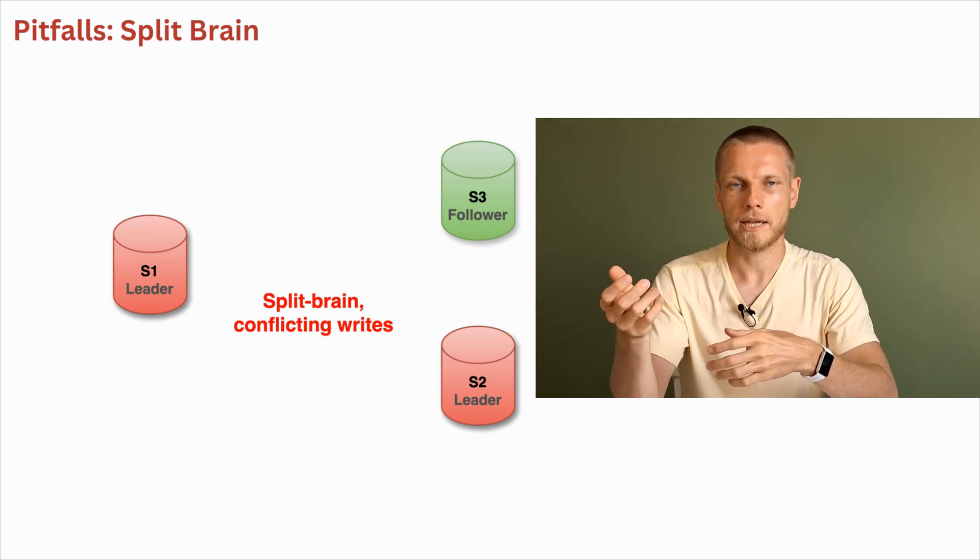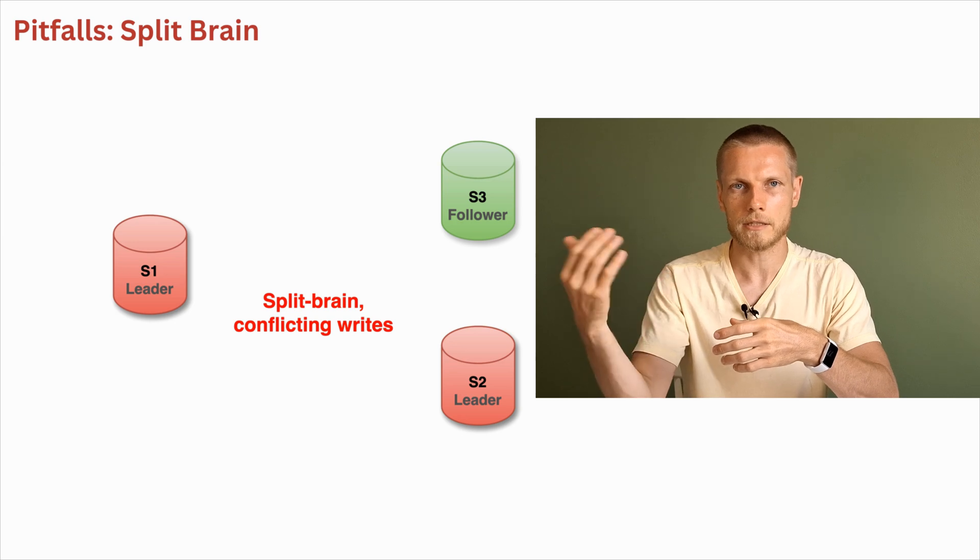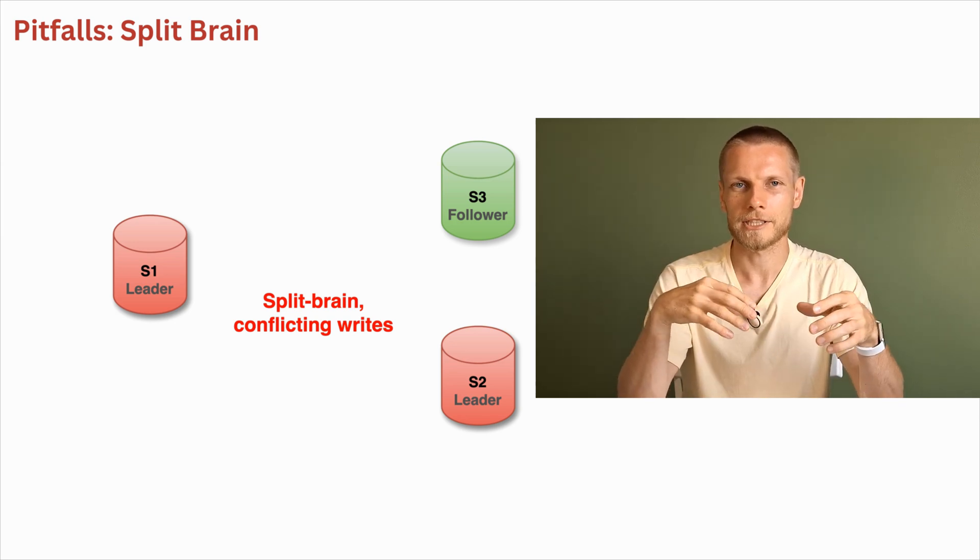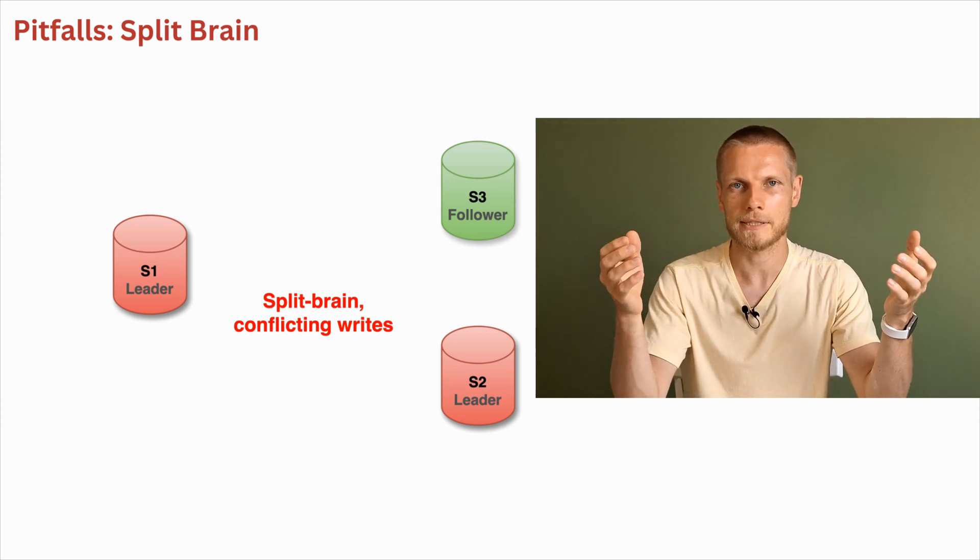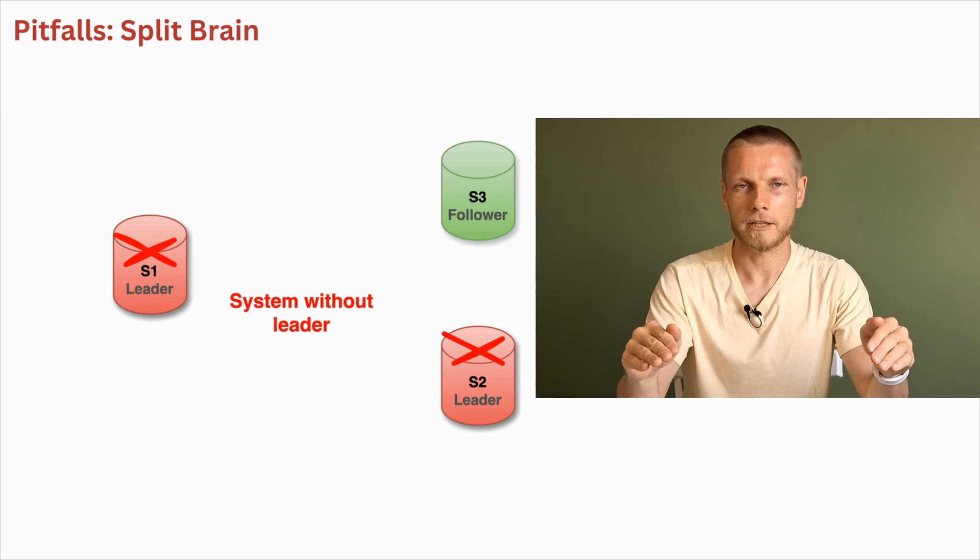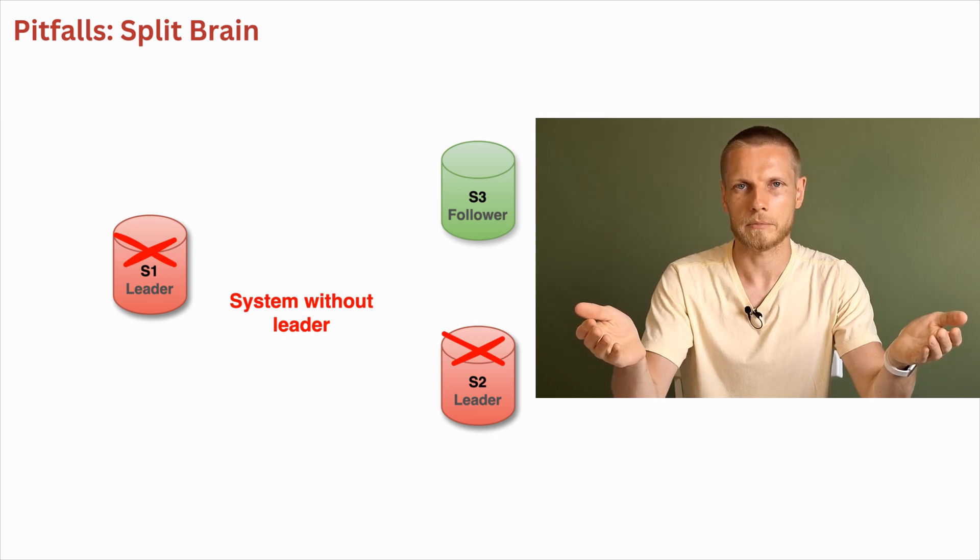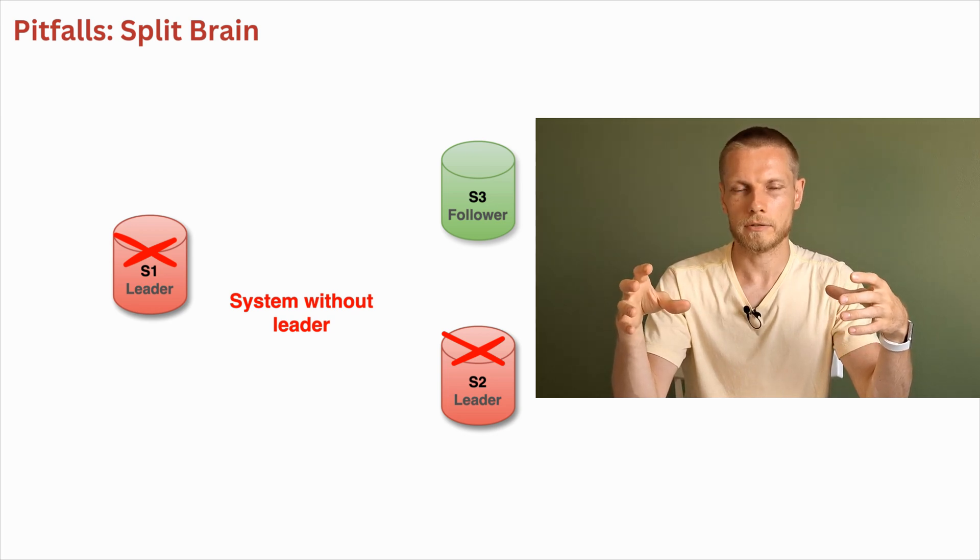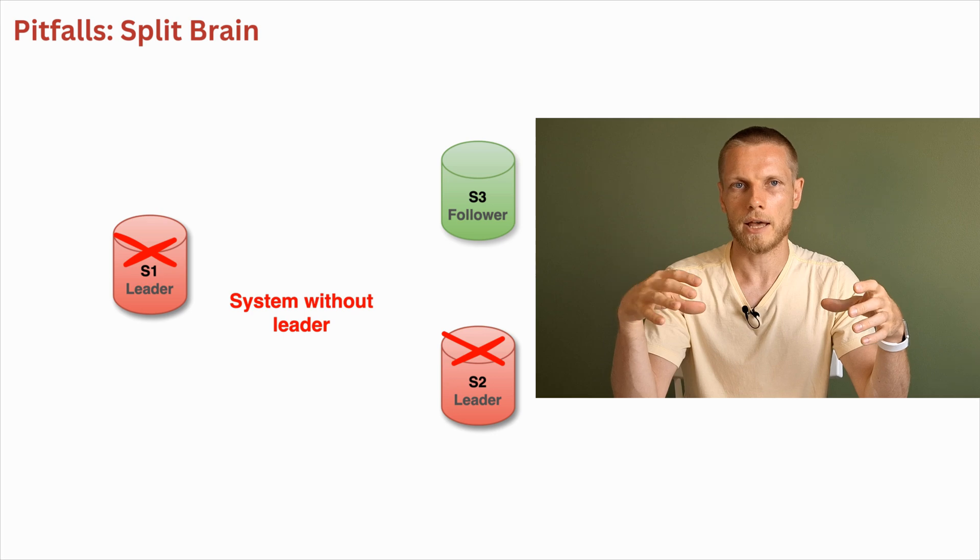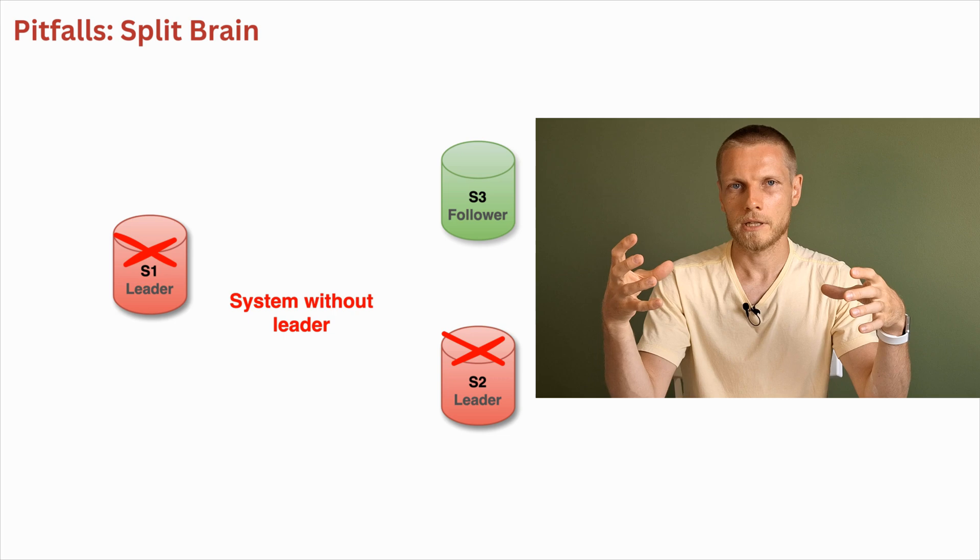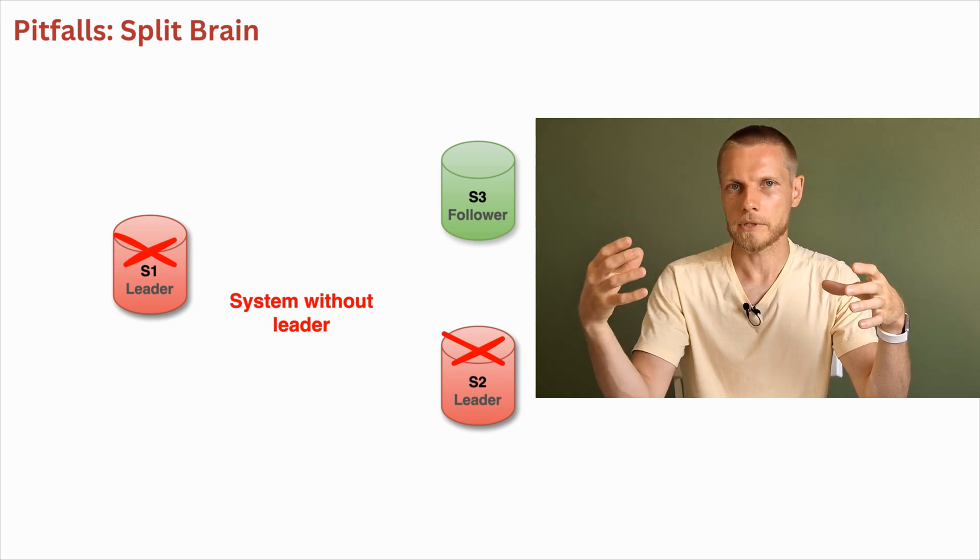Sometimes as a safety catch, if a leader detects that there is another leader it could just shut down. But if it's not carefully implemented we could end up in a state when both leaders have shut down and we have system without leader which can't accept writes. There is no easy and straightforward solutions for those problems and each system solves them differently. And sometimes people even prefer manual failover in some specific cases.